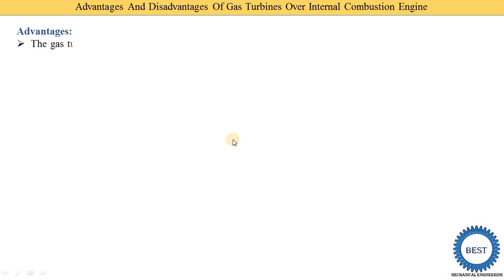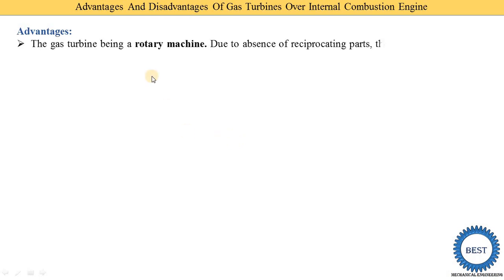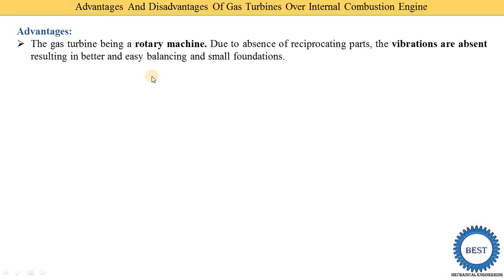The first advantage of the gas turbine is that it is a rotary machine, while the IC engine has lots of reciprocating parts — it is called a reciprocating machine. When reciprocating motions are present, vibrations are more. In a gas turbine, being a rotary machine, vibrations are very less or even absent.